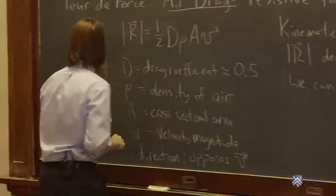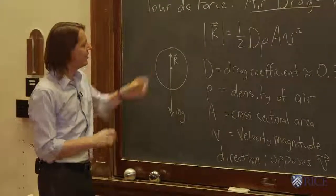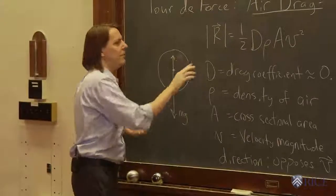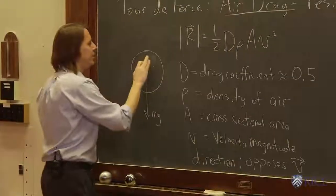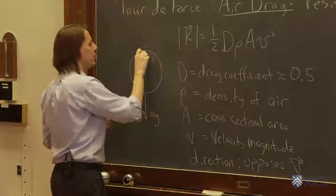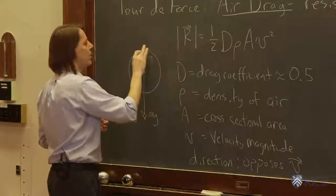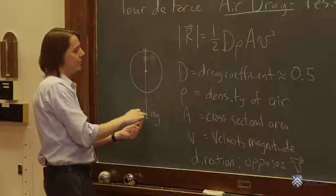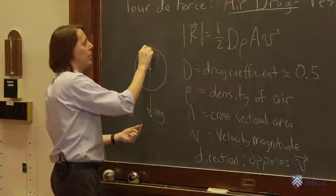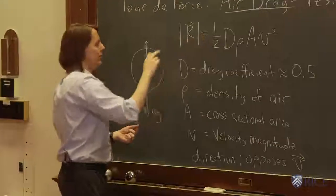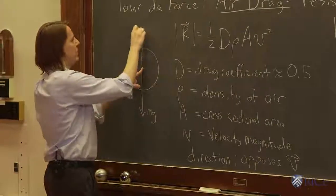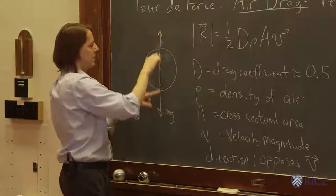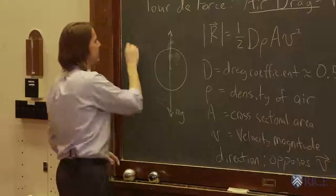Terminal velocity means this will keep accelerating as it accelerates. V will get bigger, and when v gets bigger, r gets bigger. Because it's accelerating down because the gravitational force is still winning. But the faster it goes, the bigger this force gets. And eventually, it would reach the point where this is the same size as this.